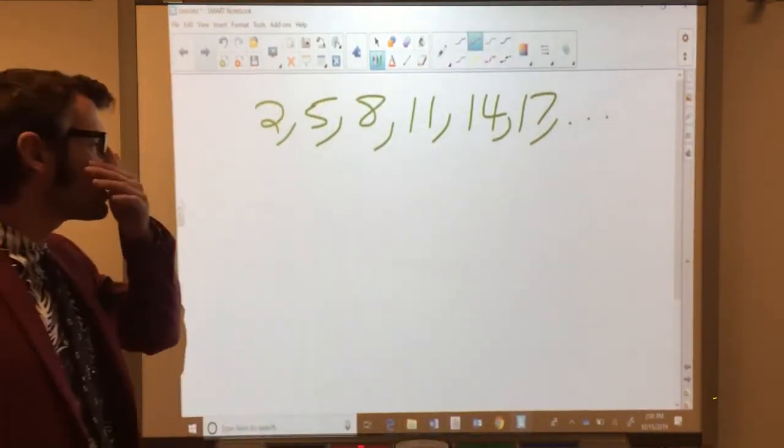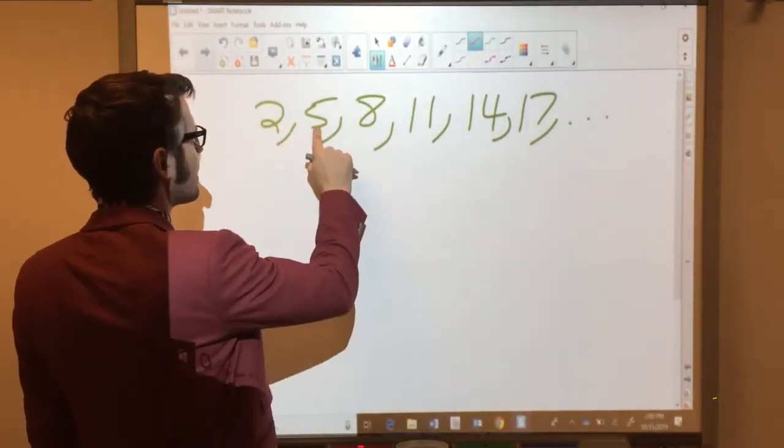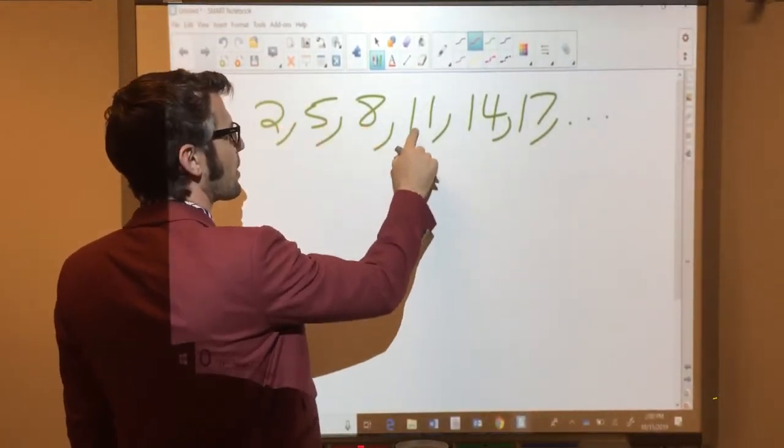The first thing you want to do with a sequence of numbers like this is see if there's a pattern. It looks like each of these numbers is going up by 3 each time.